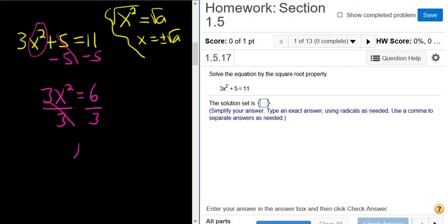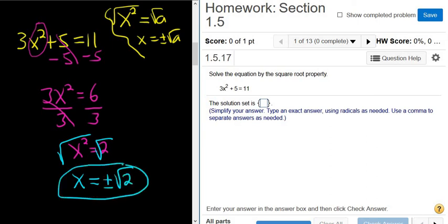So we get x squared equals 2. So at this point, we're ready to go. We take the square root of both sides, and then whenever you take the square root and there's a variable squared, the 2 goes away, and you put a plus or minus on the right-hand side. And that's it. Hope it made sense.